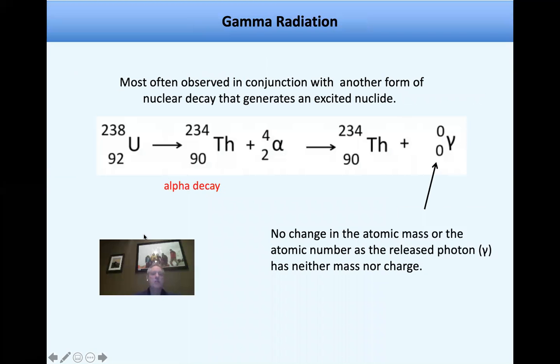So gamma irradiation is observed almost exclusively in conjunction with another type of nuclear decay. So here what we see is U-238 undergoing alpha decay into thorium, releasing helium. But the U-234 that's formed, this could be unstable too. And as a consequence, what you emit is a photon. And what you see over here, that is gamma radiation emits a photon, there's no change in atomic mass or the atomic number because the photon has neither mass nor charge.